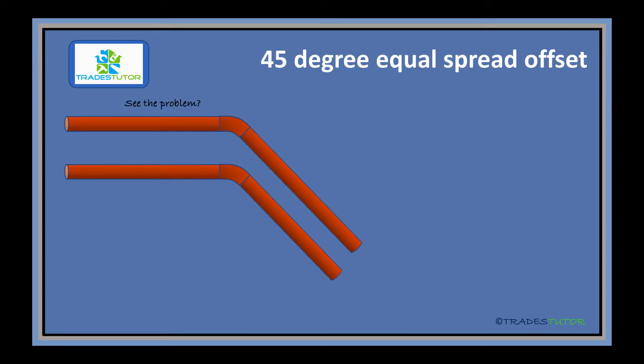Now, you see the problem here? The distance between the first two pieces there is larger than between the second two. So this is what we have to figure out here. This is how we have to make it, so that in the end of the day, the spread is the same throughout. So how do we do that?